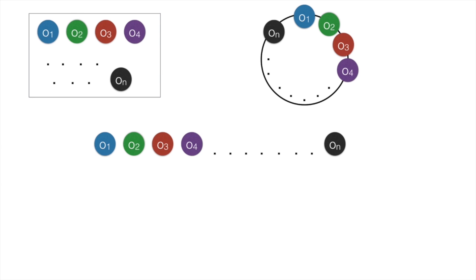Another linear permutation I could get is o2, o3, o4, o5, up till o n and then o1. Again, if I were to join the two ends o2 and o1 together, I would get the same circular permutation as given.